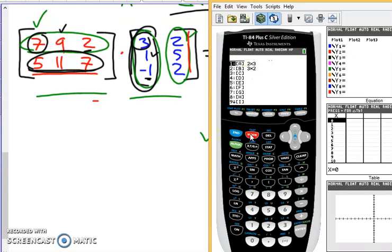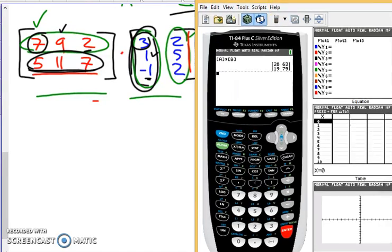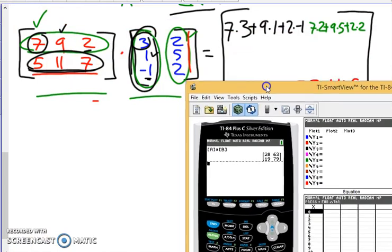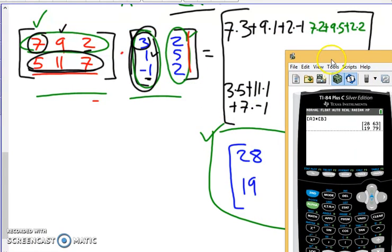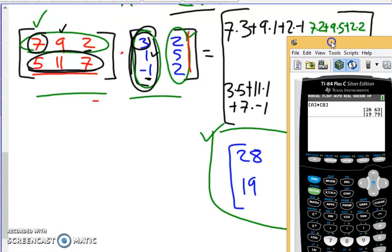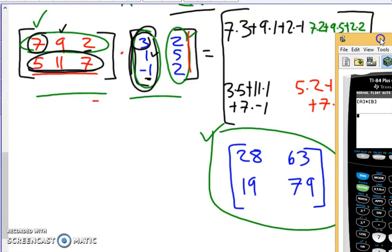So go second, quit, back to your main menu here. You're going to want to go second matrix. Hit enter. That lets us select matrix A. And we want to do matrix A times. Now go second matrix. Put in matrix B. So we're doing matrix A times matrix B. You hit enter. It should give us out the same matrix we got when we did our computations there. And you'll see we got 28, 63, 19 and 79.